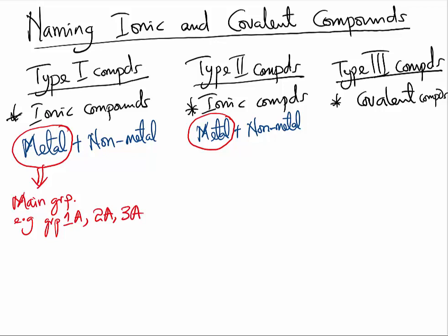On the other hand, the metal in Type 2 compounds will be transition metals. One of the things about transition metals is that they do not have just one type of charge. They have variable charges.